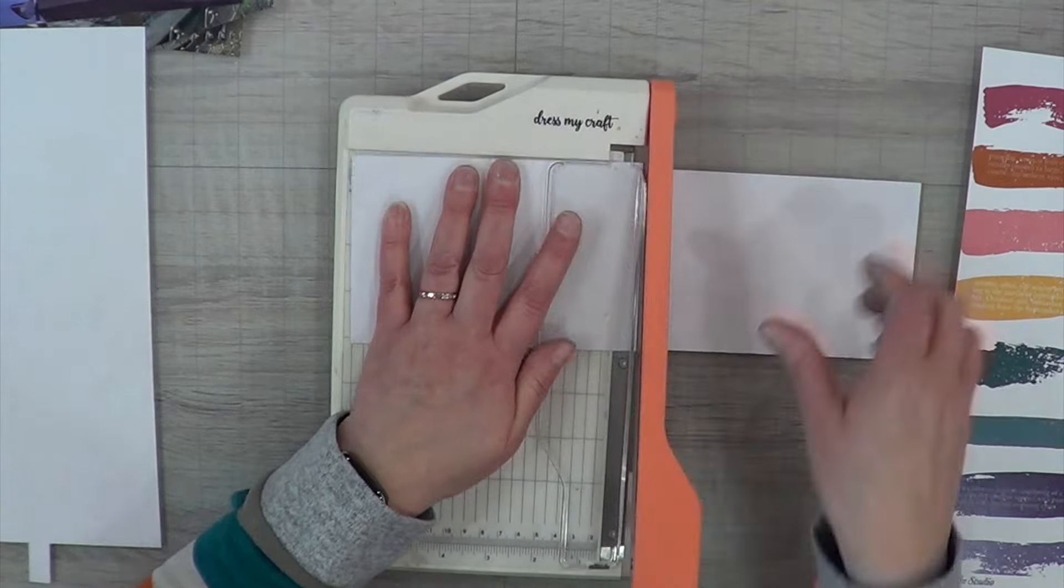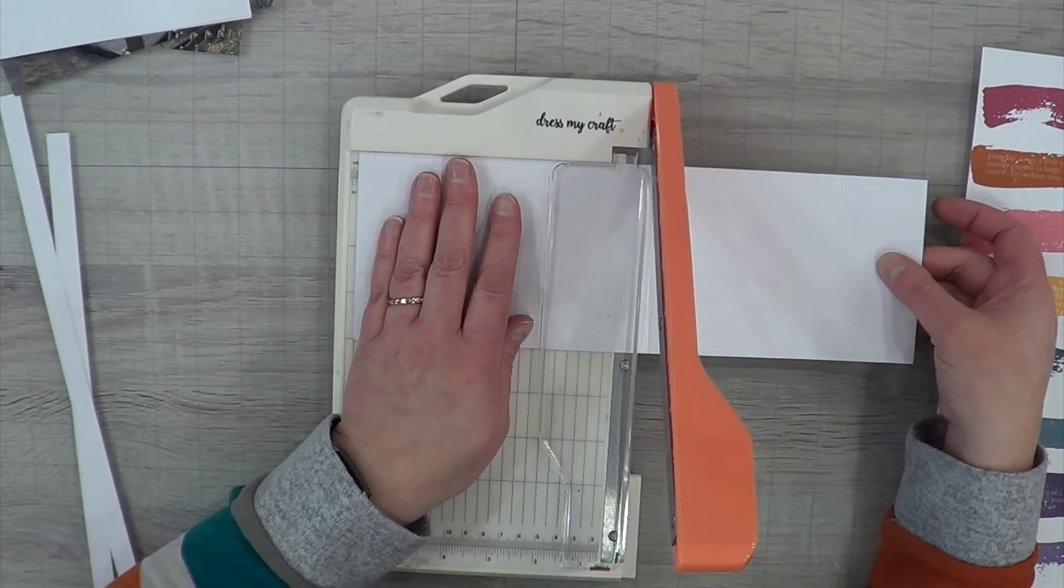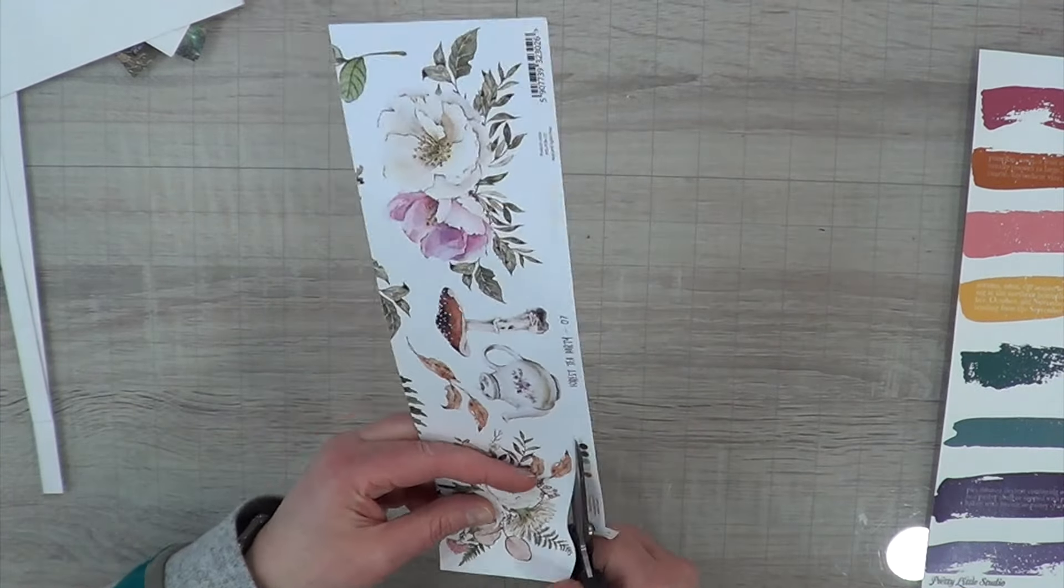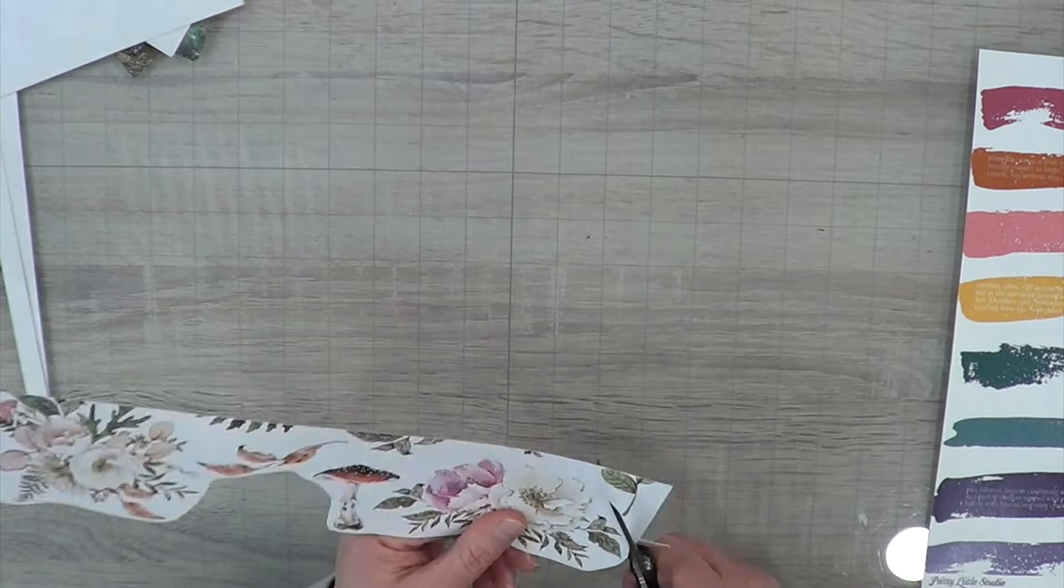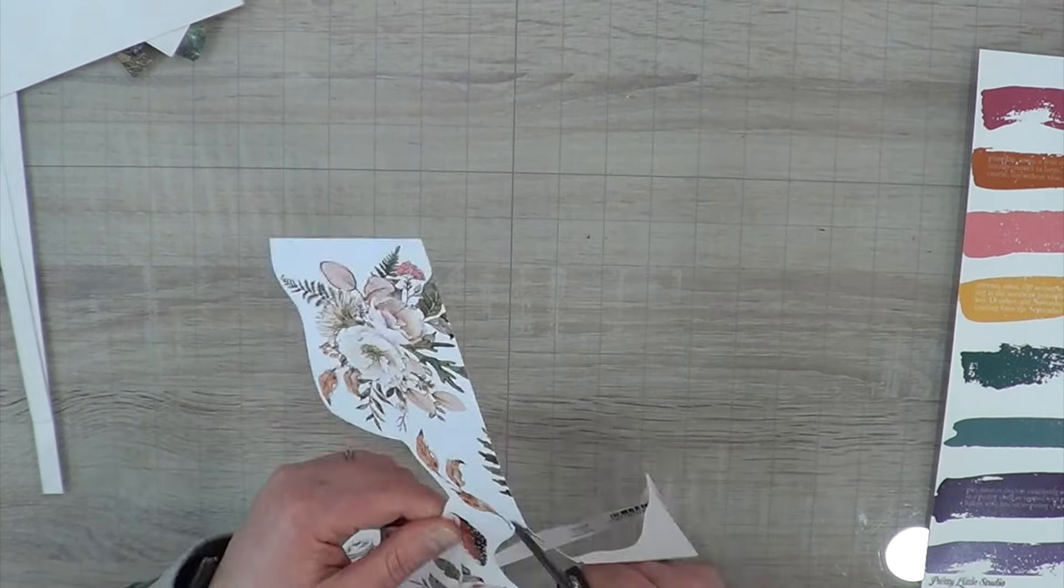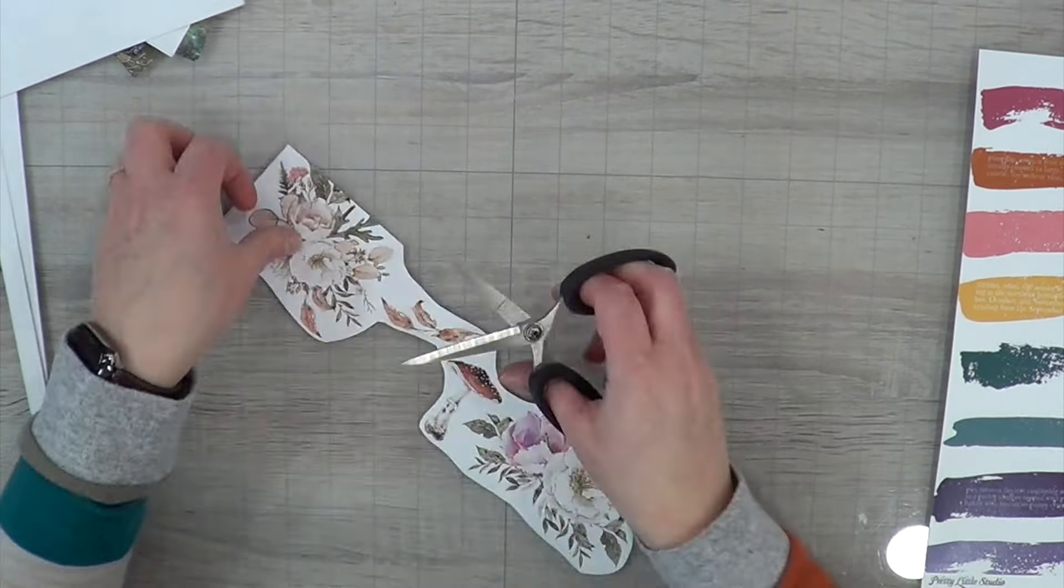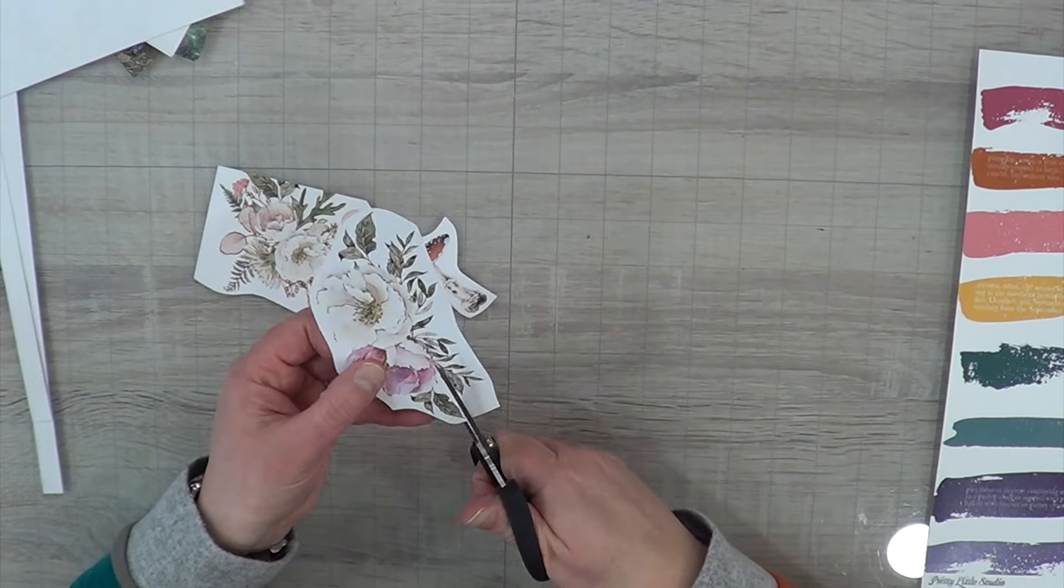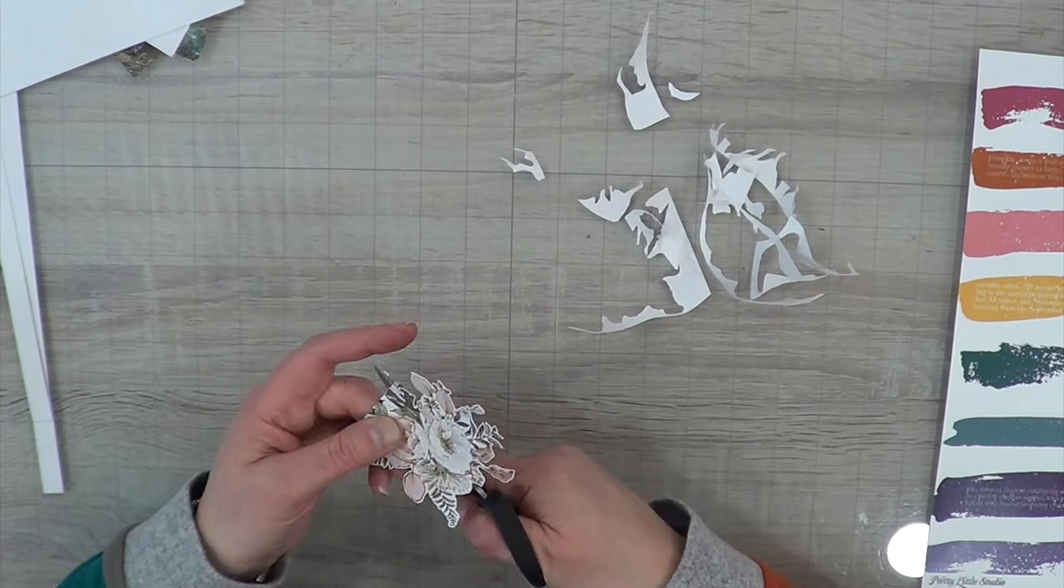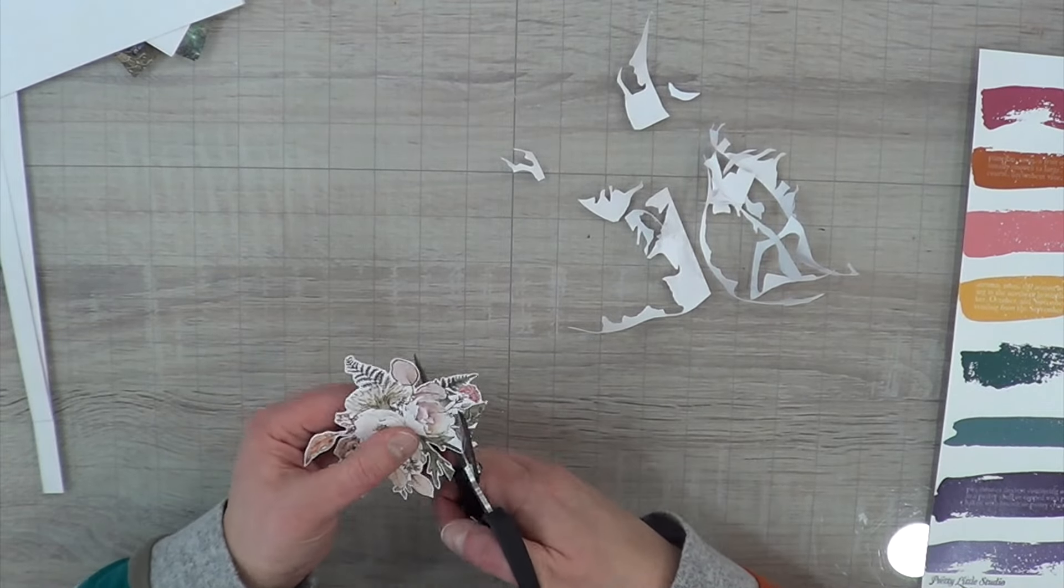I'm also checking to see which side of the paper has some fussy cut things that I can maybe fussy cut out because this is also a pretty autumn-y paper as well. So I'm going to go ahead and fussy cut out what was left over from me cutting the strips and the paper mat and that is what I am going to do.